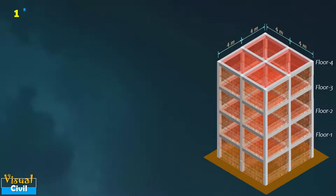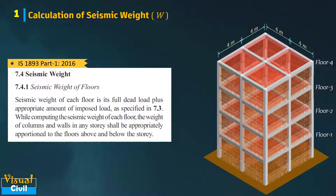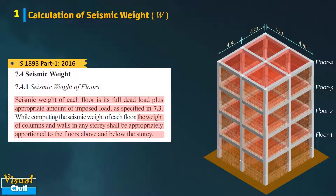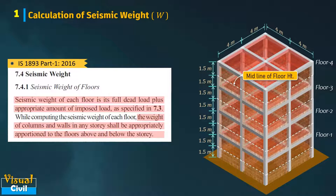So, let us compute the seismic weight of the floor in the first step. As per clause 7.4.1 of IS 1893 2016, seismic weight of each floor is its full dead load plus appropriate amount of imposed load. The weight of the columns and walls in any storey shall be appropriately proportioned to the floors above and below. Assume the weight of columns and walls at half storey height, considered as 50 percent above and 50 percent below. As the floor-to-floor height is 3 meters, consider columns and wall weight of 1.5 meters above and 1.5 meters below the floor level.